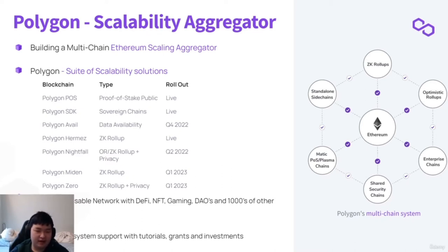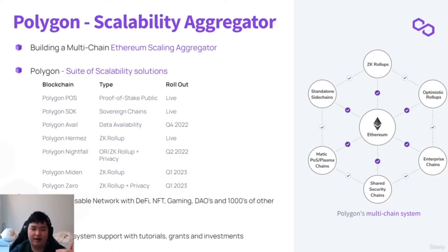We have a lot of different blockchains available for you. What we're going to cover in this course is the Polygon Proof of Stake, which is live right now — it's the main flagship product. As our security standards increase and get better, we have ZK rollups also in progress. As a result, Polygon Nightfall, Midan, and Zero will be coming out later this year and early next year.